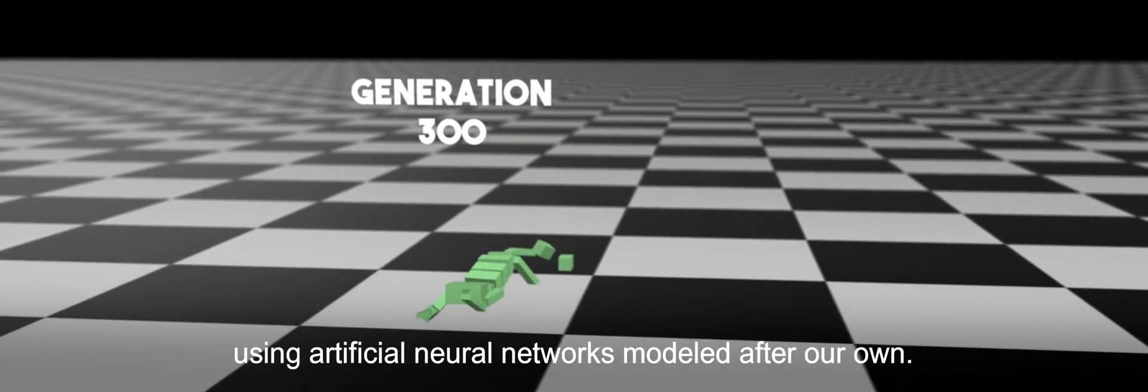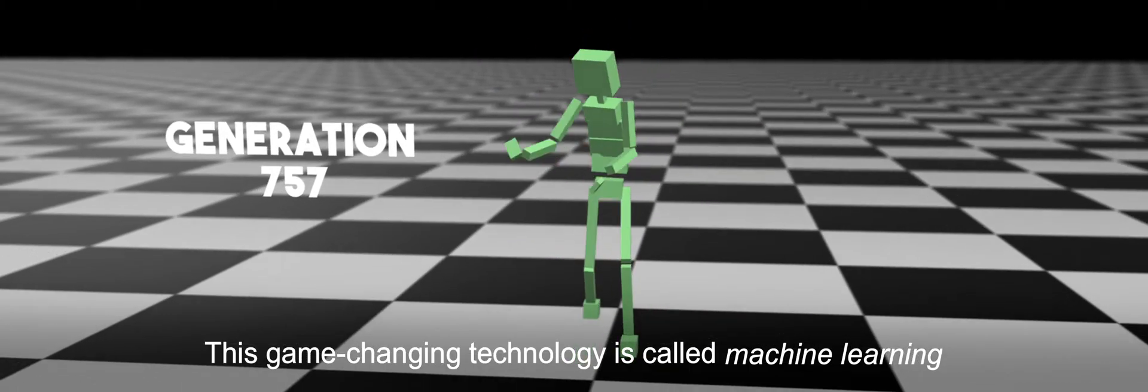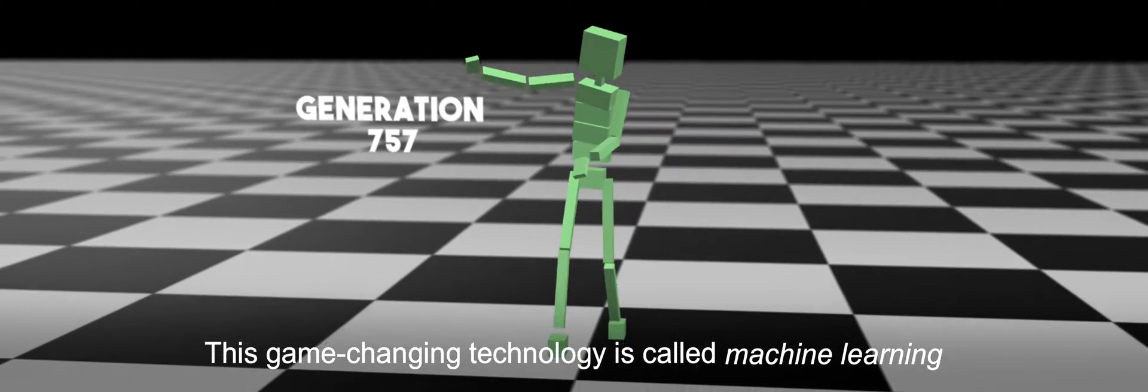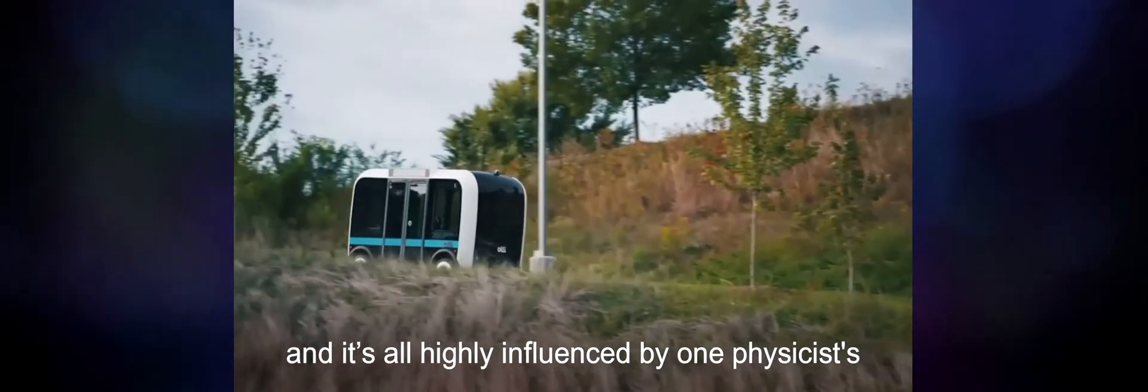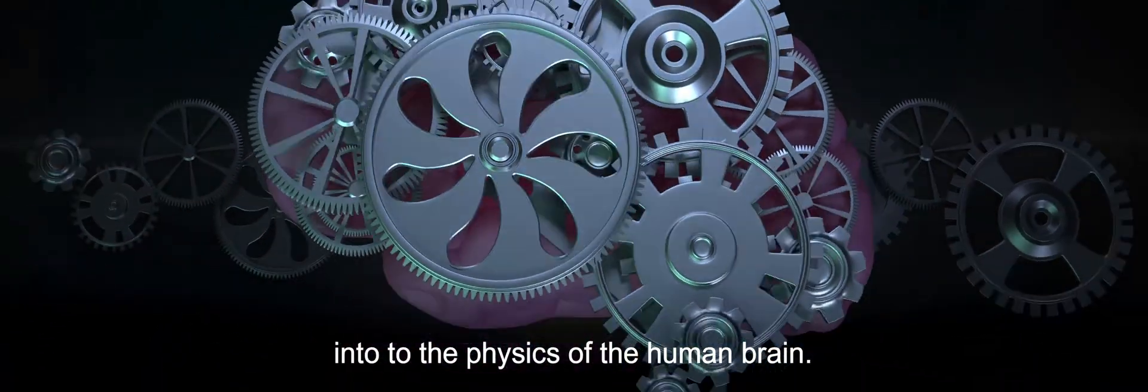The robot teaches itself to walk using artificial neural networks modeled after our own. This game-changing technology is called machine learning, and it's all highly influenced by one physicist's unlikely and innovative research into the physics of the human brain.